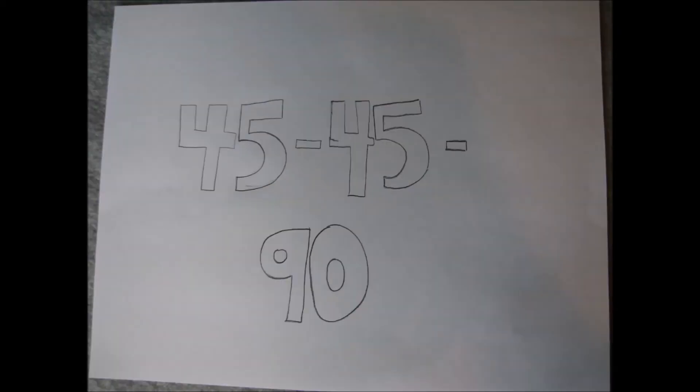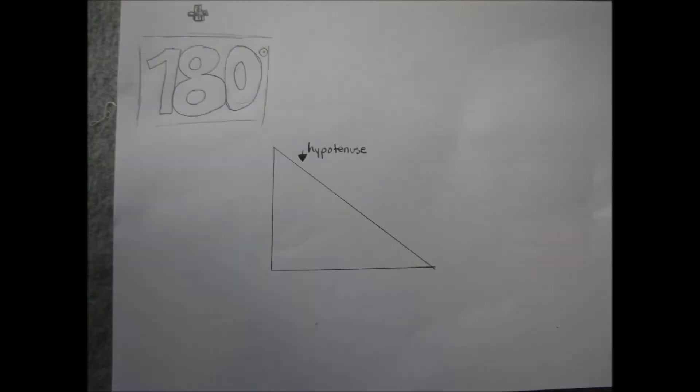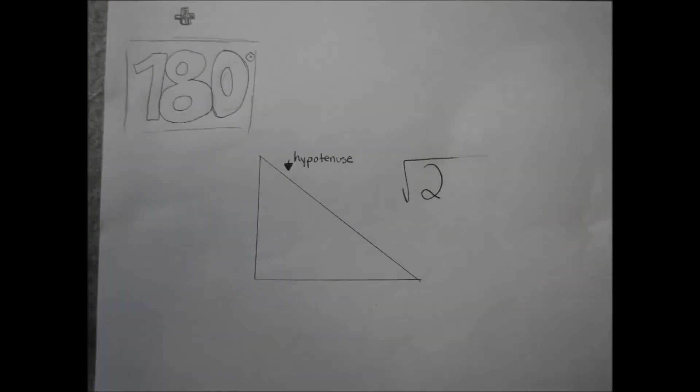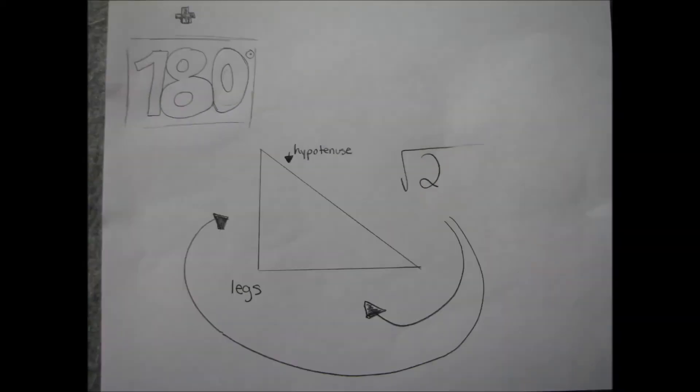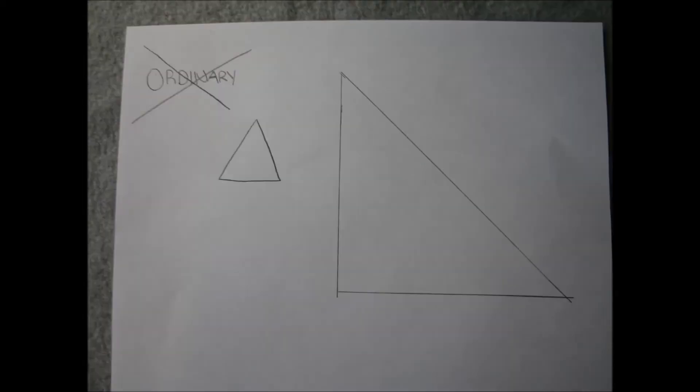45, 45, 90, adding up all to 180. The long hypotenuse, square root two from the legs below. These aren't your ordinary triangles, they're special in different ways.